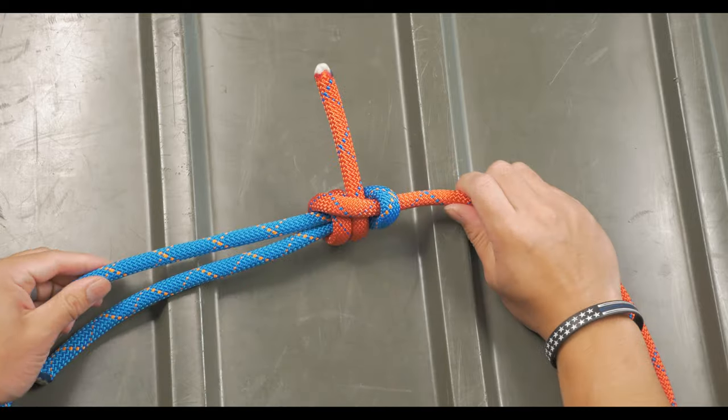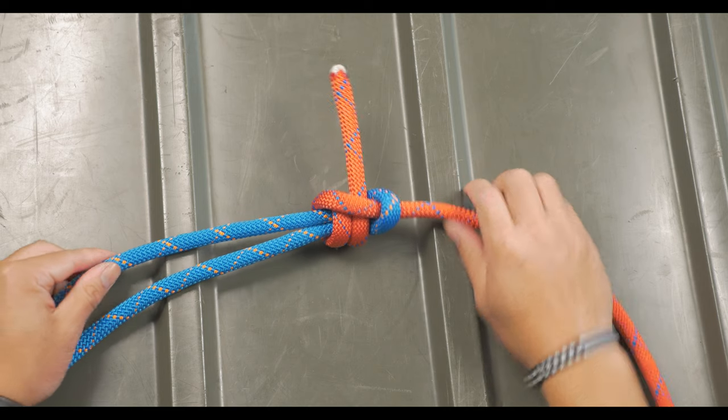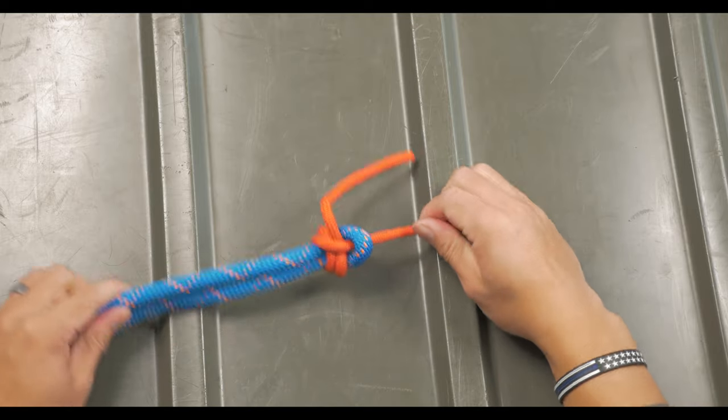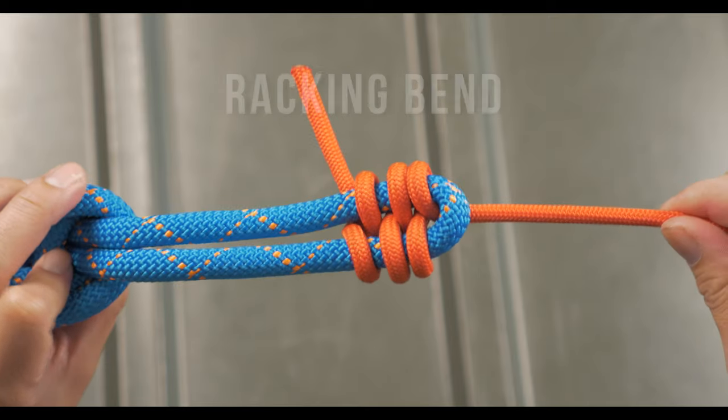This knot is good for two ropes of varying diameters, but if the difference of the diameters is super drastic, then the next bet is the next knot, which is the racking bend.